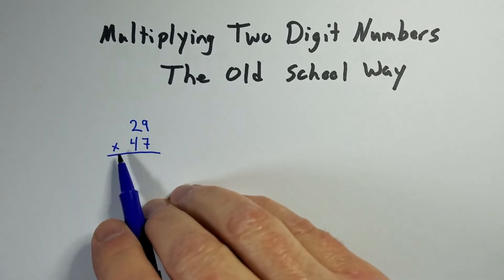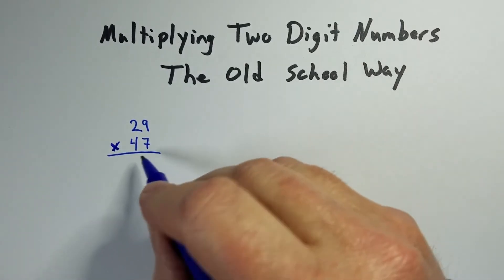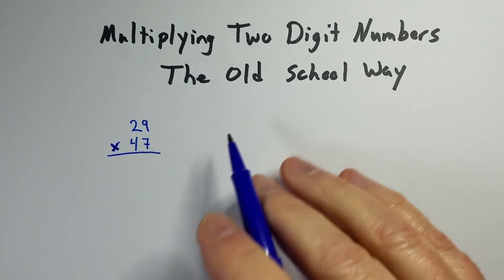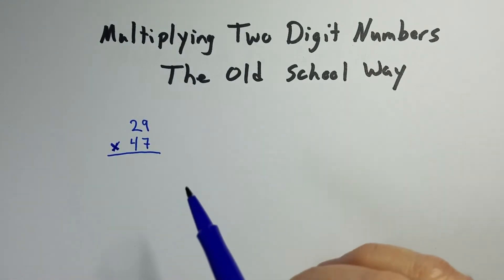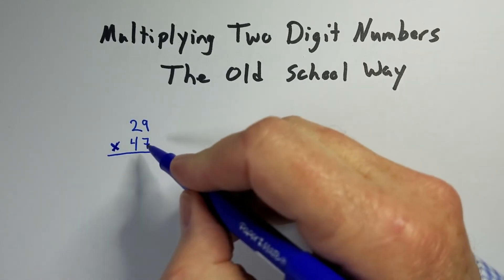So let's say we've got 29 times 47. And you should already know your multiplication tables from 1 to 9. And that makes this a lot easier, but let's take a look at this.